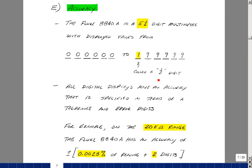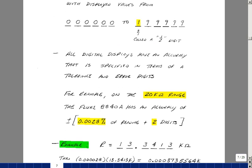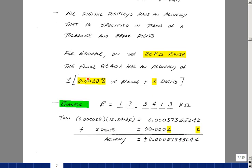When we do read something on the screen there is a window of accuracy just like there's a tolerance to the resistance. So let's take a look at some numbers here. On the 20k ohm range of the multimeter the accuracy is listed by Fluke as 0.0028% of whatever your reading is plus two digits.